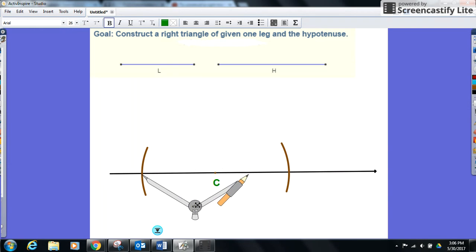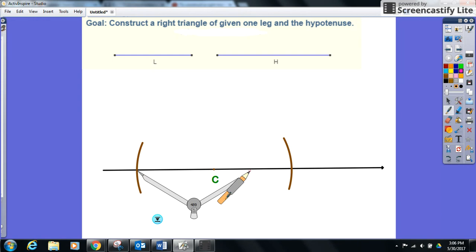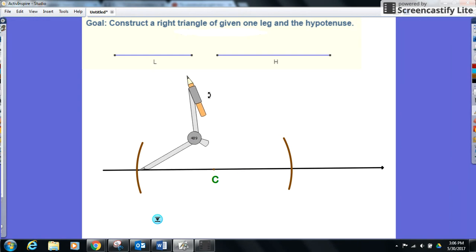We will now go to each point of intersection and we're going to make an arc above or below—it doesn't matter, probably easier to do above. Keep that same compass opening, which is length H, and we'll go on to the other side.